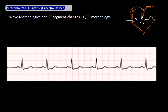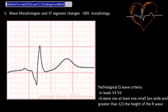After evaluating the morphology of the P waves, look at the QRS complexes in all 12 leads. If the patient does have a QRS complex, are there Q waves? In this case, there is no Q wave, which is normal. That means that the first wave in this QRS complex is an R wave. If the patient does have a Q wave, as shown here, how do you know when it's pathologic?